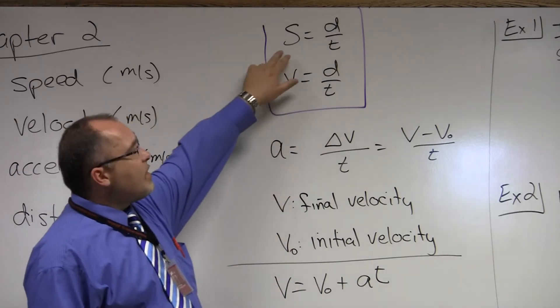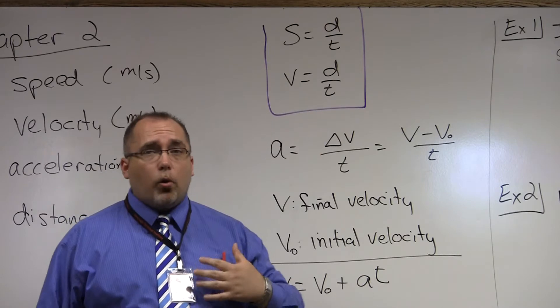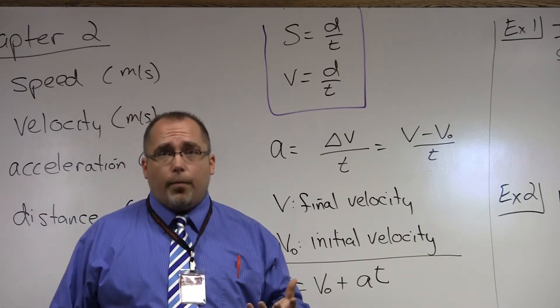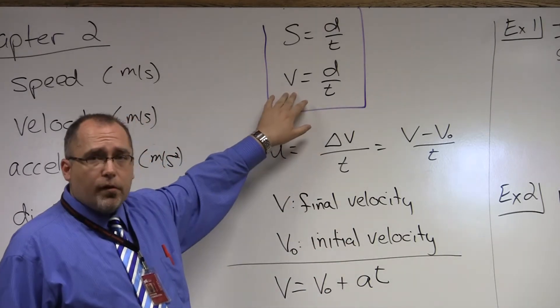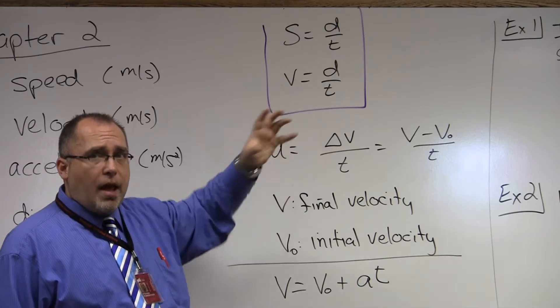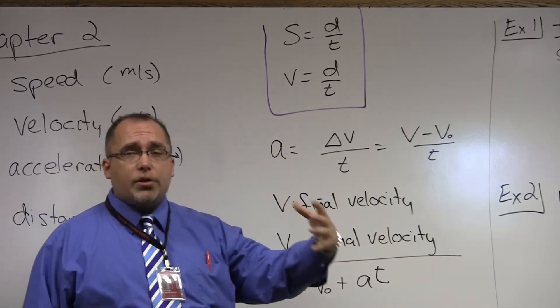The key here is speed is a scalar quantity. Scalar quantity only has magnitude, or a numerical value. Velocity, however, is what we call a vector quantity. It has a magnitude, which is a numerical value, but also a direction.